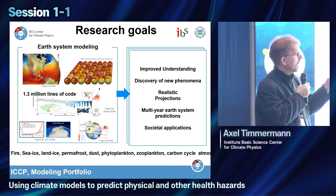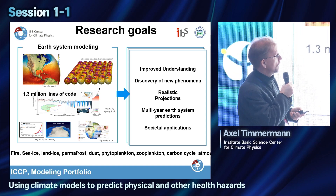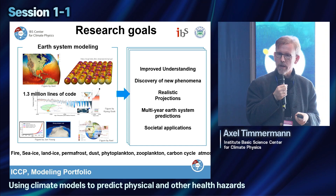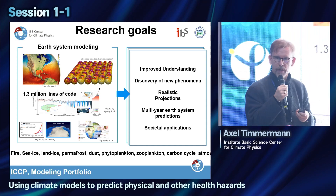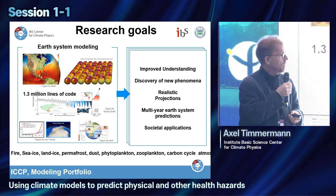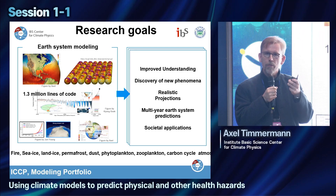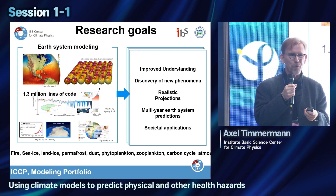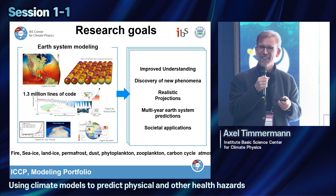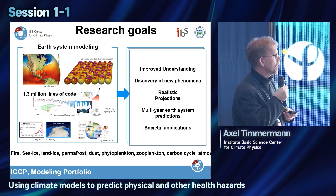In our center, the main goal is to provide improved understanding. We are an institute for basic science, but we are also interested in discovering new climate phenomena. In particular, we are doing realistic climate projections for the future. In addition, we have recently developed a multi-year Earth system prediction model that can realistically predict the climate of the next five years. Climate and weather are different — weather is what's happening right now, while climate is essentially the statistics of weather, and that one is predictable.